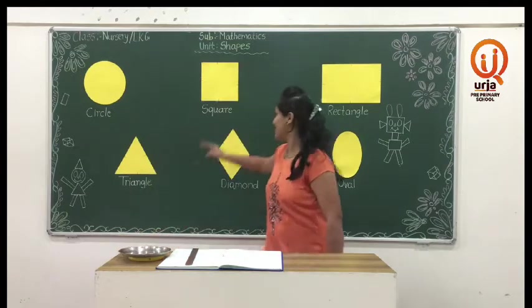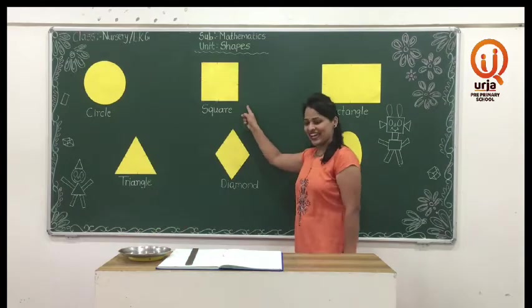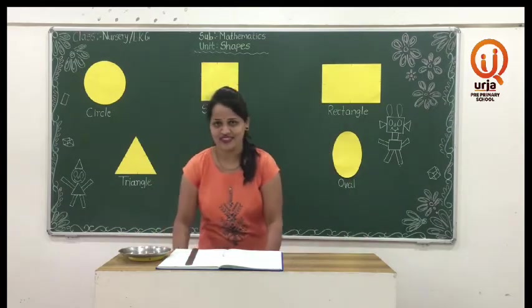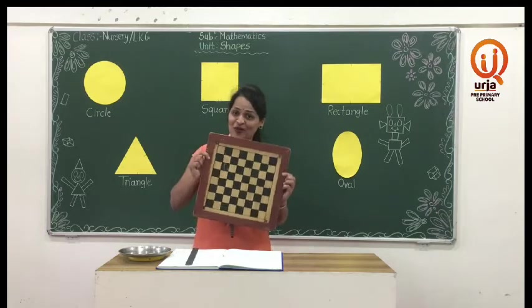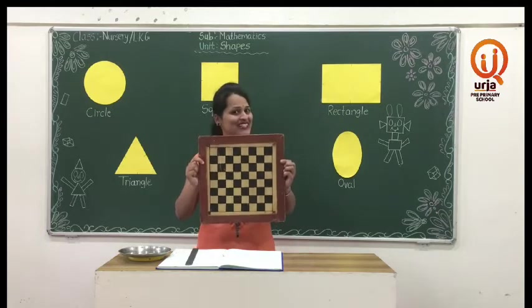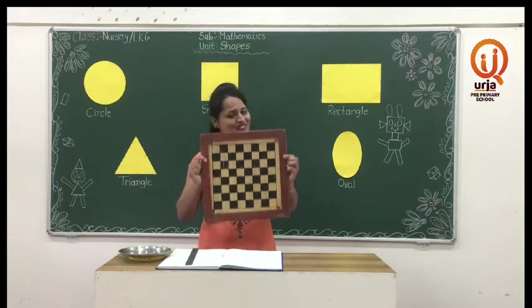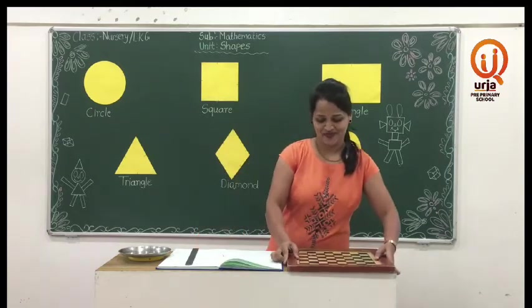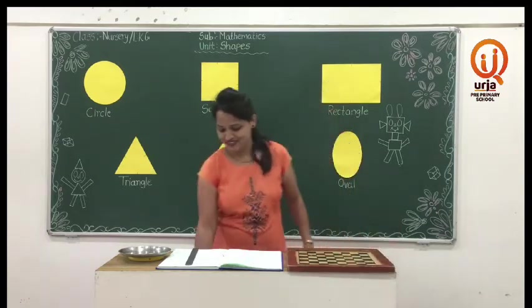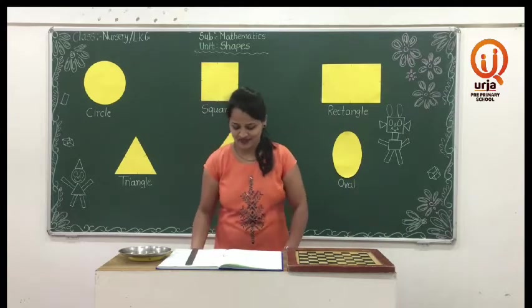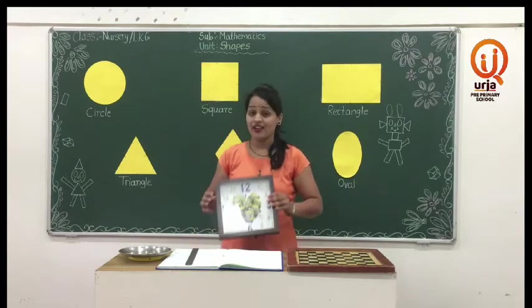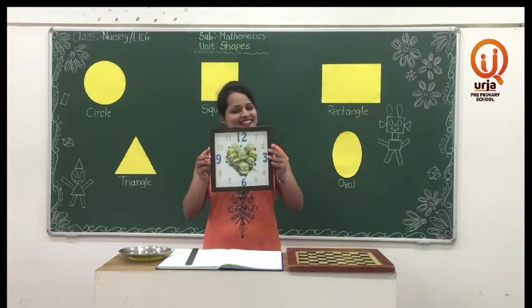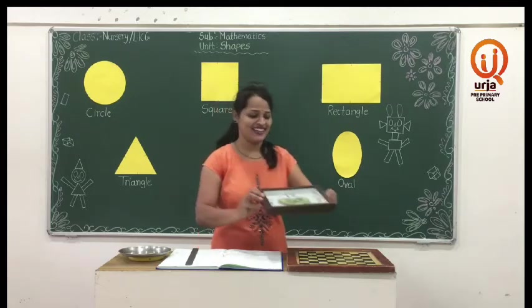Next, square. The shape of the chessboard looks like a square. The shape of the clock looks like a square.